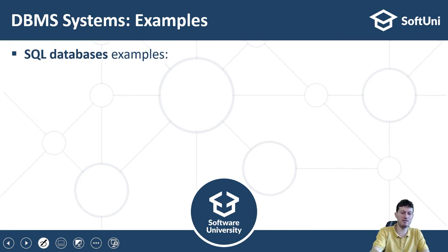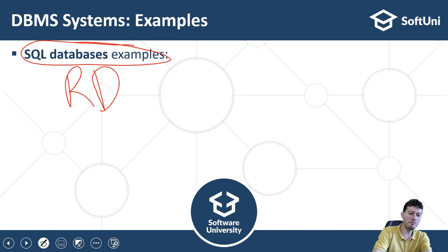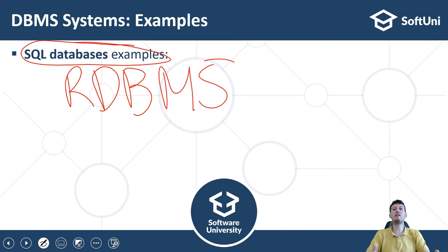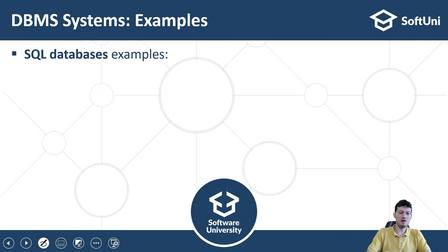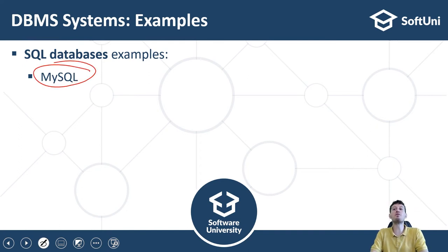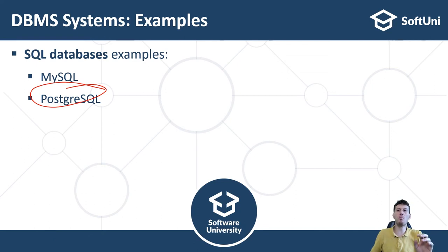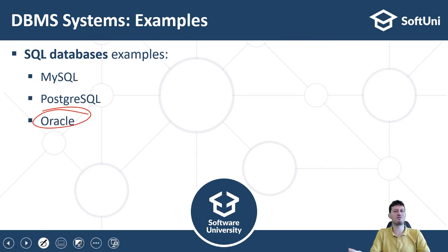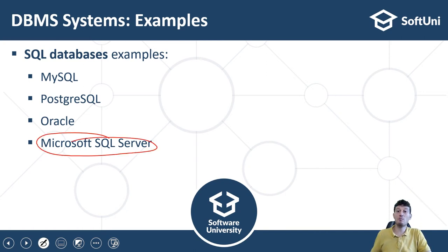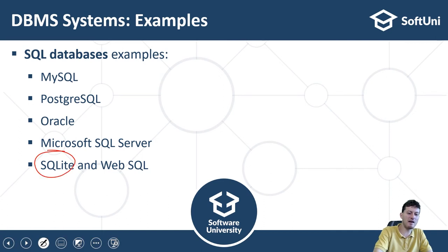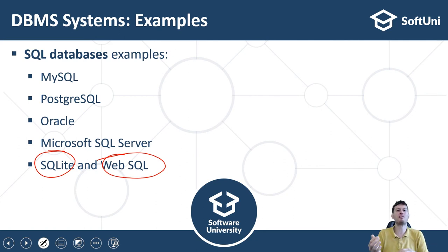There are tens of relational database management systems (RDBMS). The most widely used ones are: MySQL — a popular, simple, open-source relational database for simple projects such as websites; PostgreSQL — very powerful, popular, open-source relational database for more complex projects; Oracle — a commercial relational database used by the financial industry and big corporations; MS SQL Server — a powerful relational database from Microsoft, popular in the .NET development ecosystem; and SQLite and Web SQL — small, simple embedded relational databases used in mobile apps and client-side web apps.